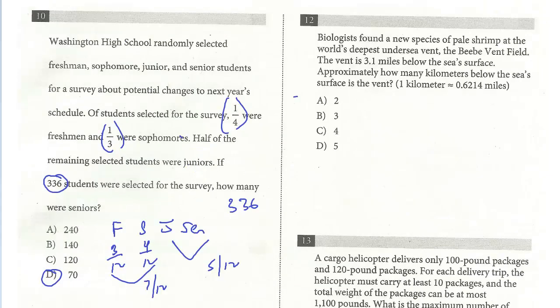Let's take a look at question 12. Biologists found a new species of pale shrimp at the world's deepest underwater vent, the Beebe Vent Field. The vent is 3.1 miles below the sea's surface. Approximately how many kilometers below the sea's surface is the vent? One kilometer equals approximately 0.6214 miles.